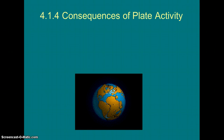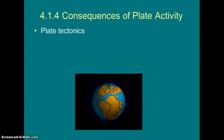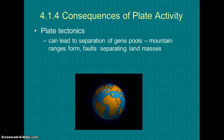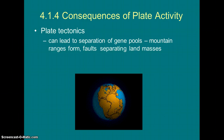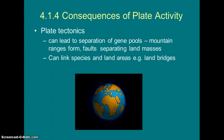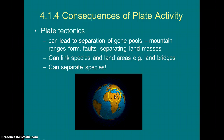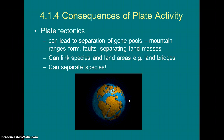Some things that can cause geographic isolation include plate tectonics. As this animation shows, the movement of continents and plates can lead to separation of gene pools — through mountain ranges forming or land masses splitting apart. Sometimes the connection of areas forms land bridges and creates new species when populations meet. Overall, the movement of those plates causes geographic isolation and the formation of new species.